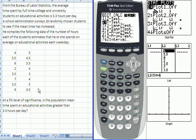The question is, at a 5% level of significance, is the population mean time spent on educational activities greater than 3.3 hours per day based on this sample? Okay, so as I said, in the situation where the population standard deviation is unknown, you're going to use t-test. So I've got that option highlighted, I'm going to press enter.